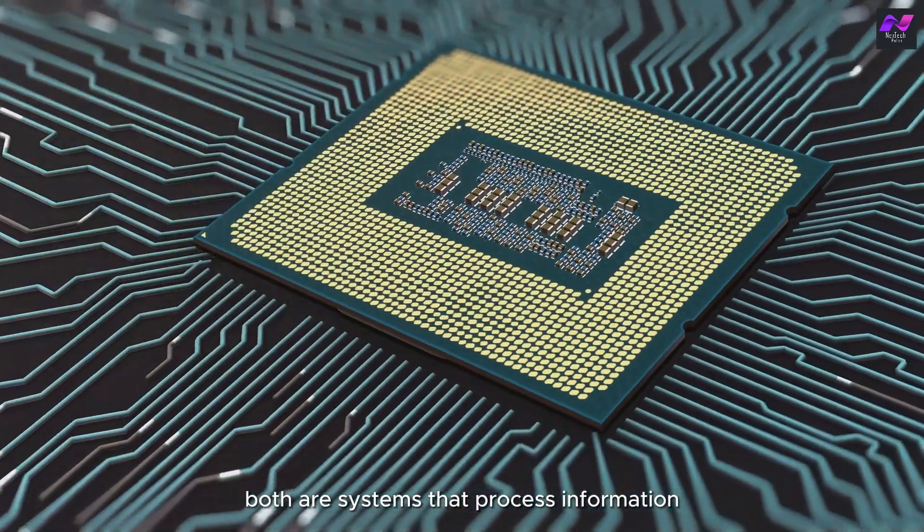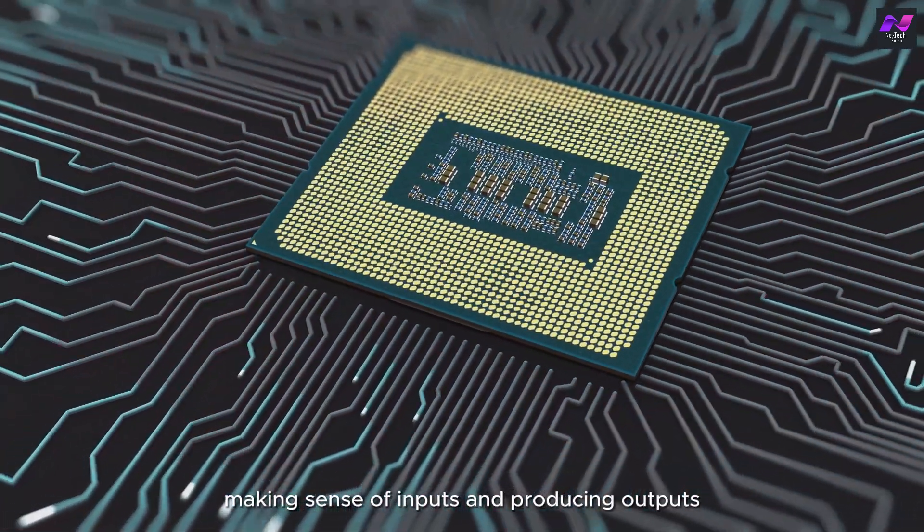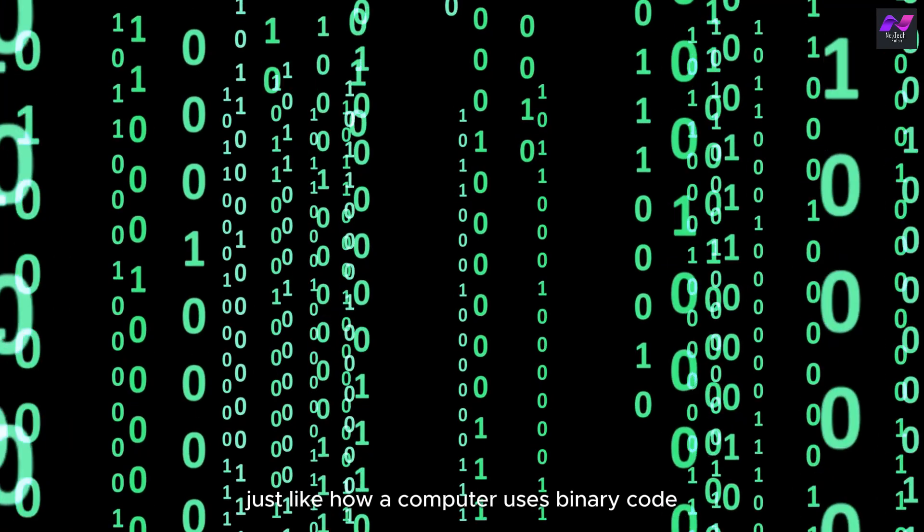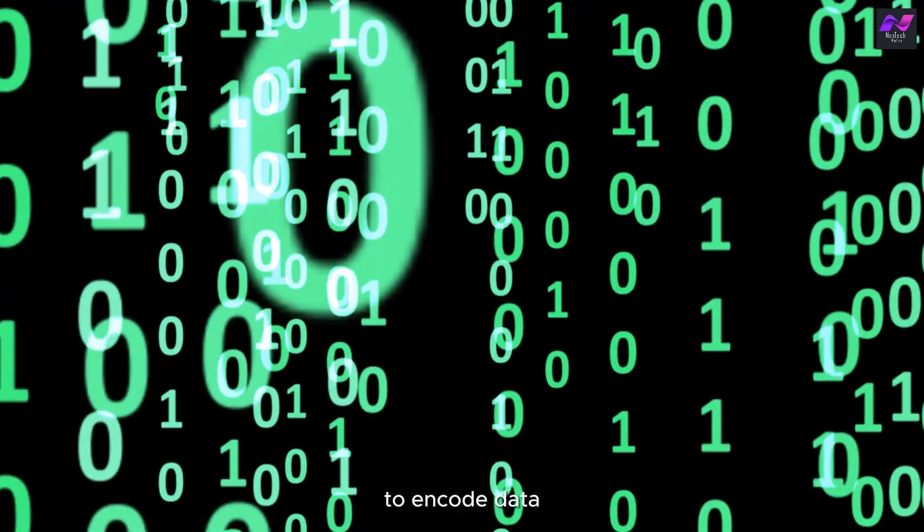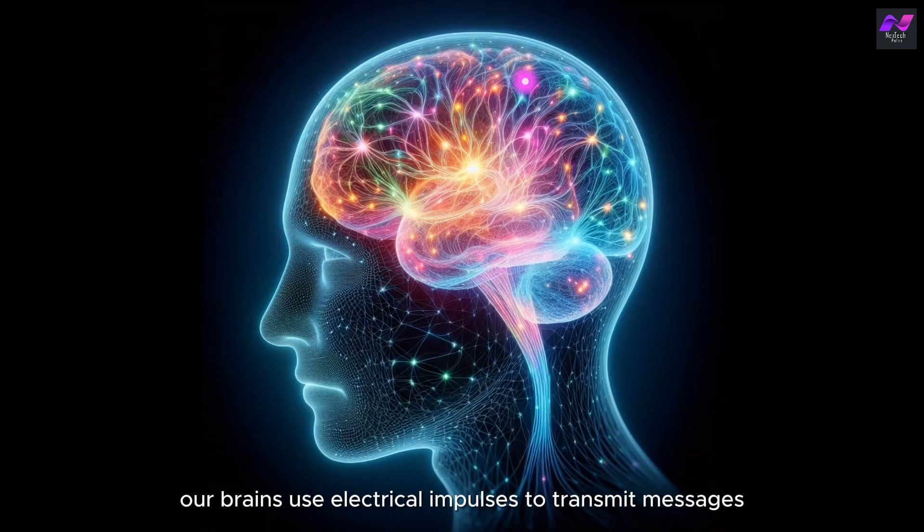Both are systems that process information, making sense of inputs and producing outputs. Just like how a computer uses binary code to encode data, our brains use electrical impulses to transmit messages.